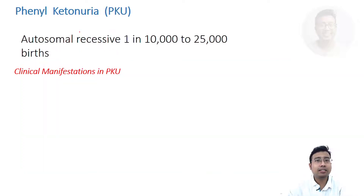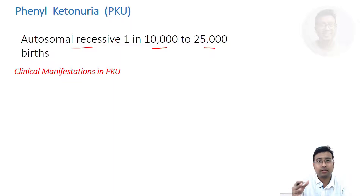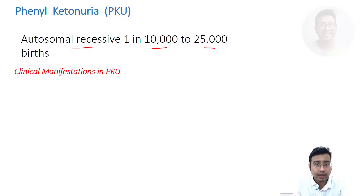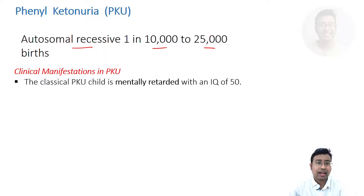Now let us look at the disease process itself. This is not a very common nor a very rare disease. It is autosomal recessive in inheritance and it occurs in nearly 1 in 10,000 to 25,000 — roughly 1 in 20,000 births. Given the population of India, it is quite prevalent. Let us first look at the clinical manifestations and then explain why they happen.